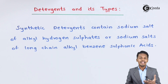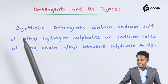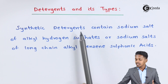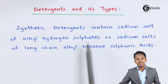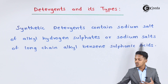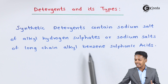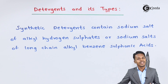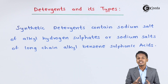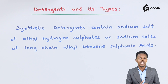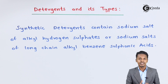The synthetic detergent contains sodium salt of alkyl hydrogen sulfate or sodium salt of long chain alkyl benzene sulfonic acids. Based on that, it is basically divided into three types, and those three types are anionic, cationic, and non-ionic detergents.